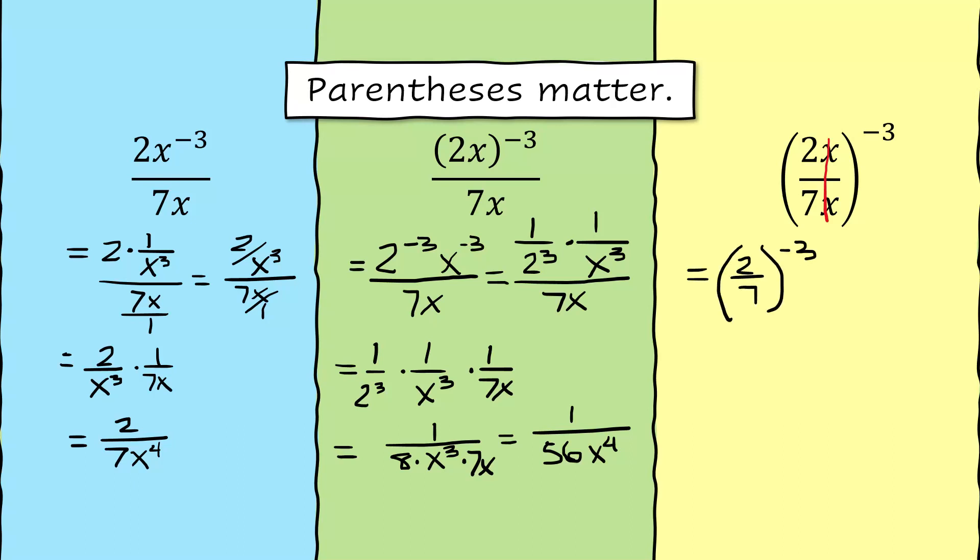2 is raised to the negative 3rd and 7 is raised to the negative 3rd. So we have 1 over 2 cubed divided by 1 over 7 cubed, and that's going to simplify to 1 over 2 cubed times 7 cubed over 1. Multiplying straight across, we get 7 cubed over 2 cubed.